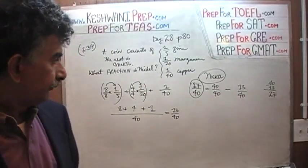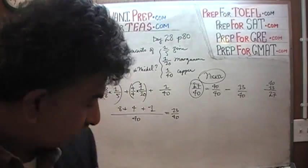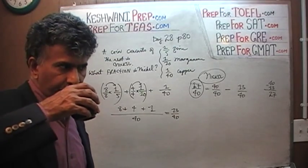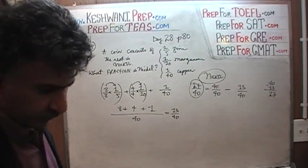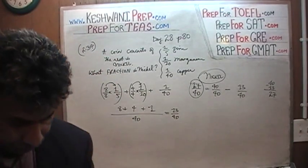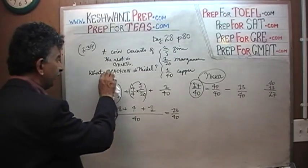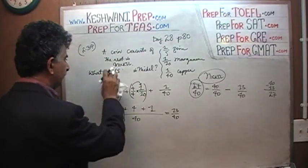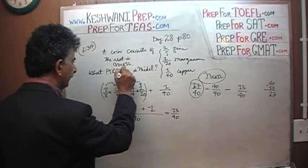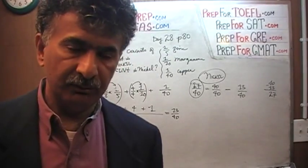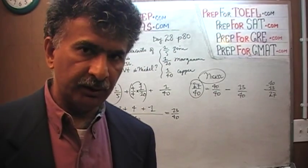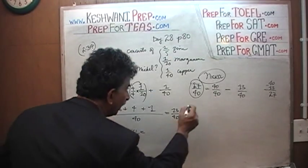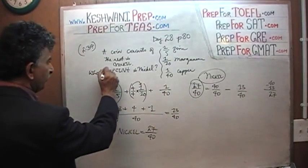Now here is my next question, which has nothing to do with the problem as given in the book — this is a bonus question, so listen carefully. What if instead of asking what fraction is nickel, the question was asking: what percent is nickel? We found that nickel was 27/40. Let's do the percent part now.